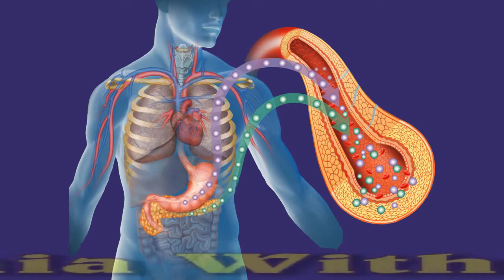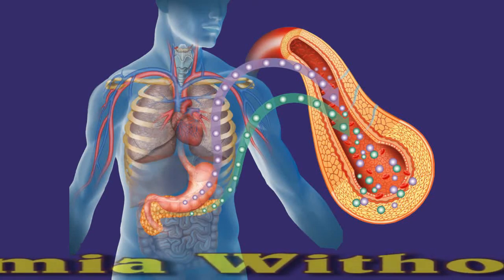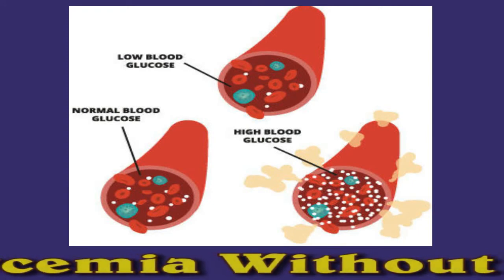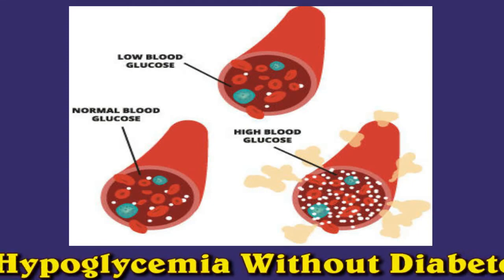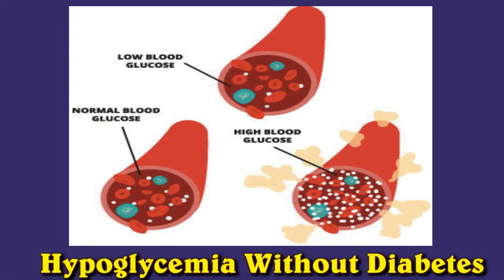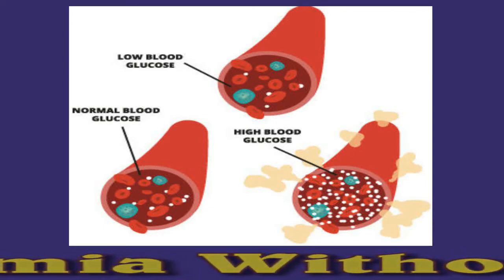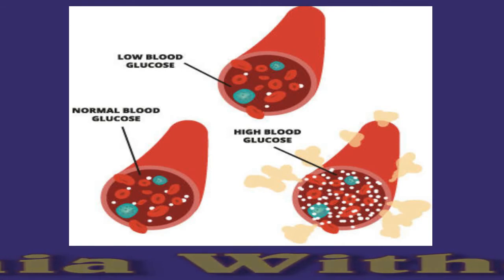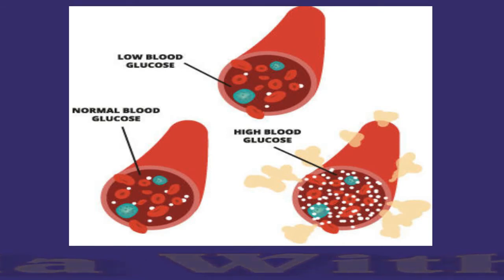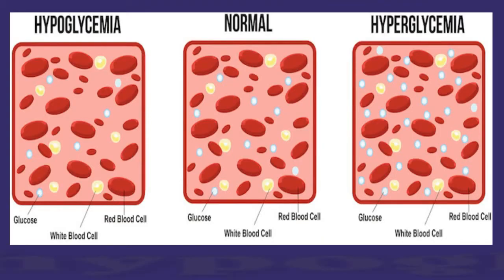Hypoglycemia without diabetes: causes and symptoms. Hypoglycemia occurs when blood sugar levels fall dangerously low. It is more common in people with diabetes, but it can affect others. In this video, we explore the health conditions beyond diabetes that can cause hypoglycemia, treatment options, and the dietary changes that can help prevent low blood sugar.